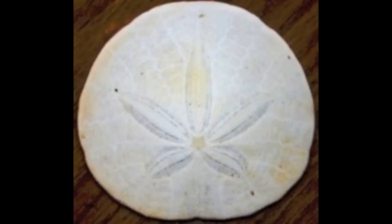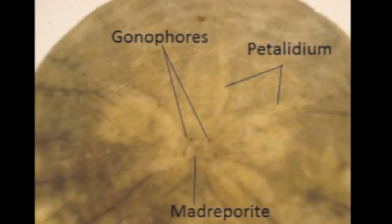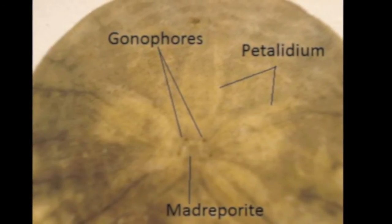On the top, or aboral side, in the center of the five-petal flower-like structure is the madreporite — a perforated, plate-like structure that forms the intake for the water vascular system. Radiating outward are the five petals, which are actually pores for the double rows of tube feet used for respiration, not locomotion. These specialized tube feet perform gas exchange similar to gills, where oxygen from the water passes through the thin skin of the animal's feet and into the body.